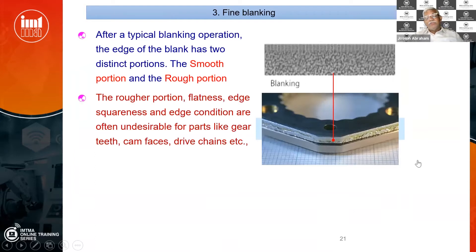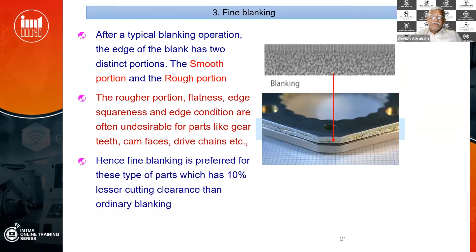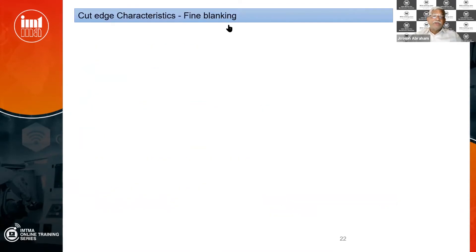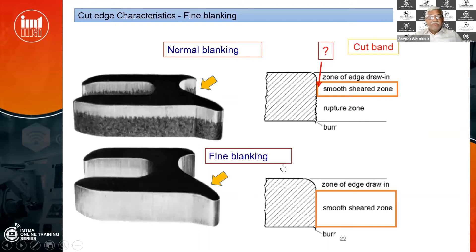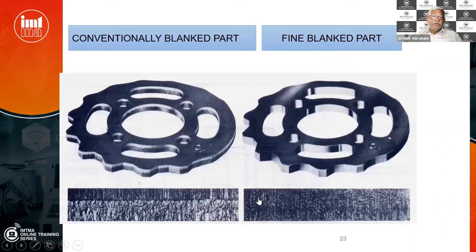The fine blanking operation will be very, very useful for high-volume production. It can eliminate a lot of different processes. We will cover what is normal blanking and what are the different cut-edge characteristics. You can see here — this is normal blanking and the bottom is a fine blanked part. Especially for gears, we require the cut-edge characteristics to be very fine throughout the face. Those things will be explained in these sessions.